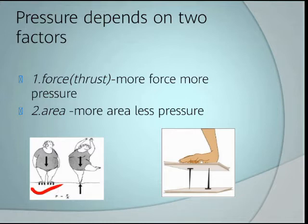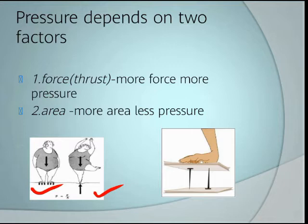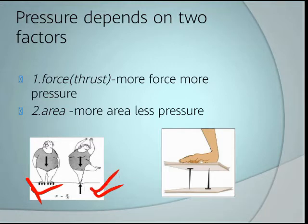When the lady was standing with two legs, she was applying some force over a large surface area. But when she was standing on one leg, the area became less — all the pressure is exerted on one leg. So when surface area is less, pressure is more. More area means less pressure, less area means more pressure.